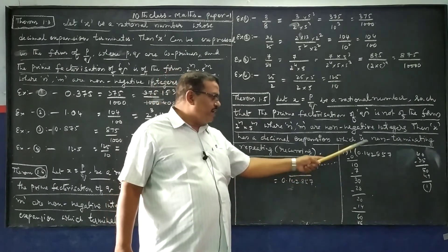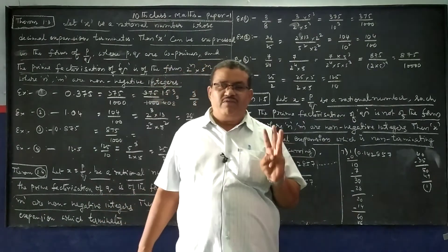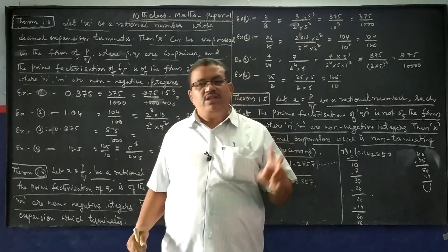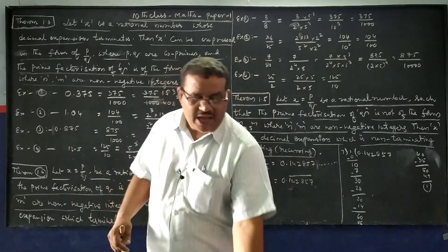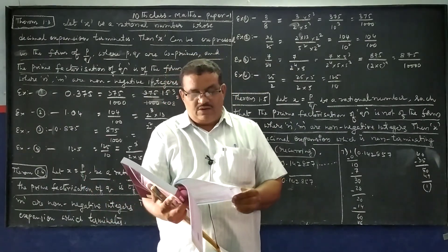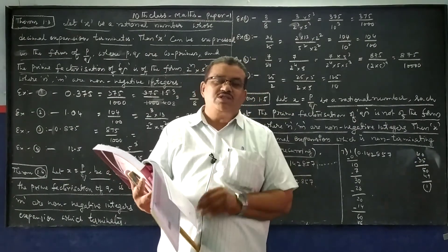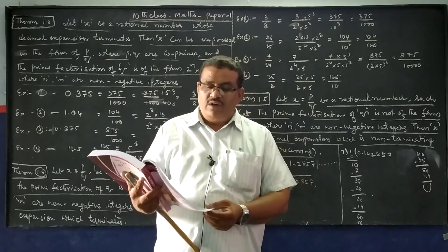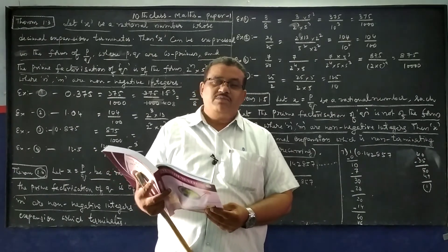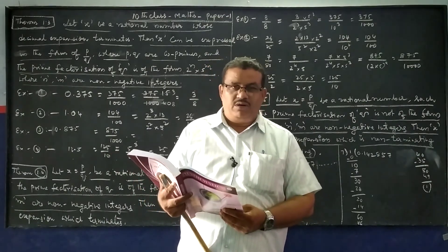The decimal expansion is also explained here. These three theorems are very, very useful to us. Children, using these three theorems, you have to do the exercise — I think that is 1.3, exercises 1, 2, and 3. These three exercises you do by yourself, and example 5 and example 6 also. It takes some more time. You have to do the problems once again. If you have any doubt, contact my number. Bye, children.